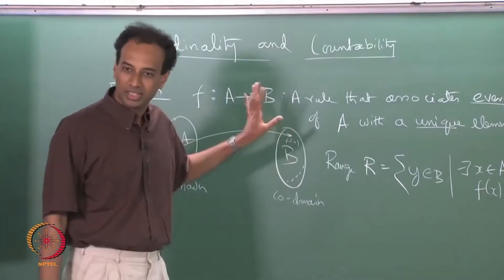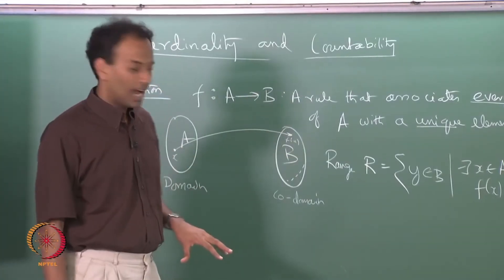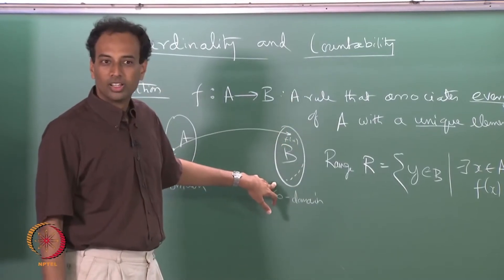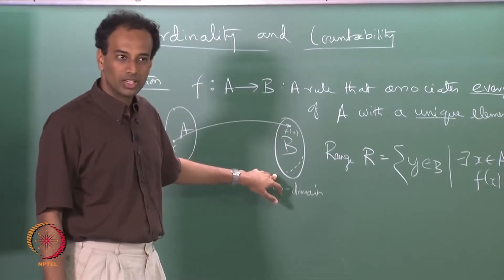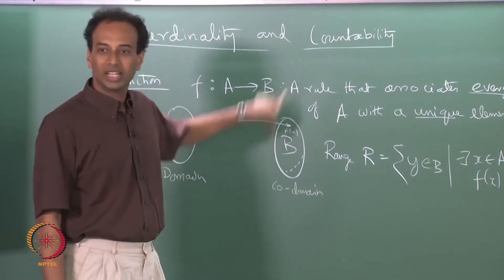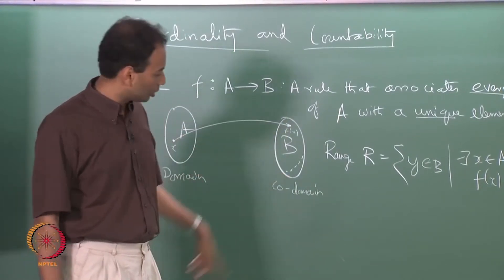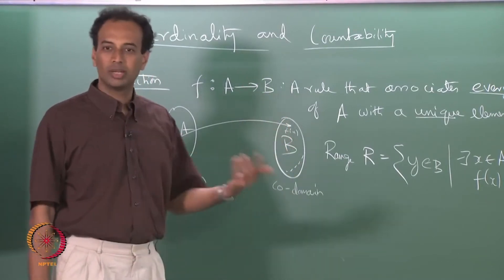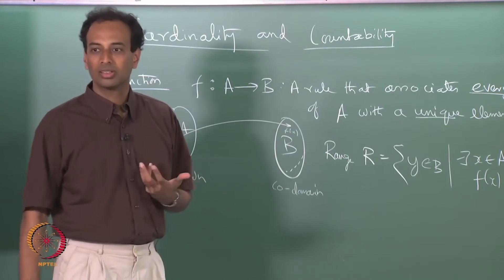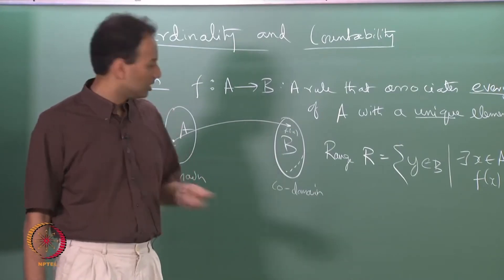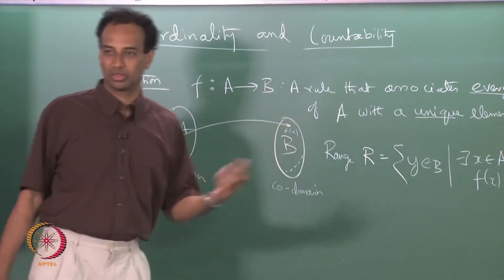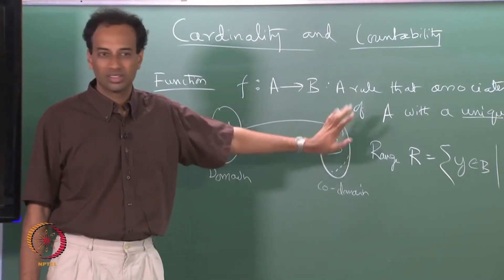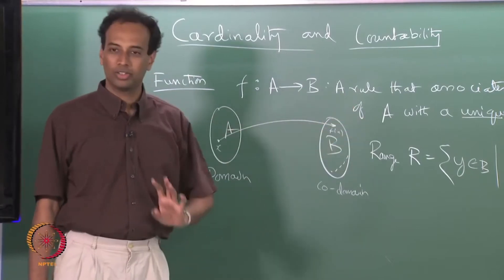We do not call set B the range; we call set B the co-domain. The range is the subset of the co-domain consisting of those elements which are actually taken by the function. The co-domain may have elements which are not in the range — those elements are never taken by the function. You cannot leave out anything in A, but you can leave out some elements in B.